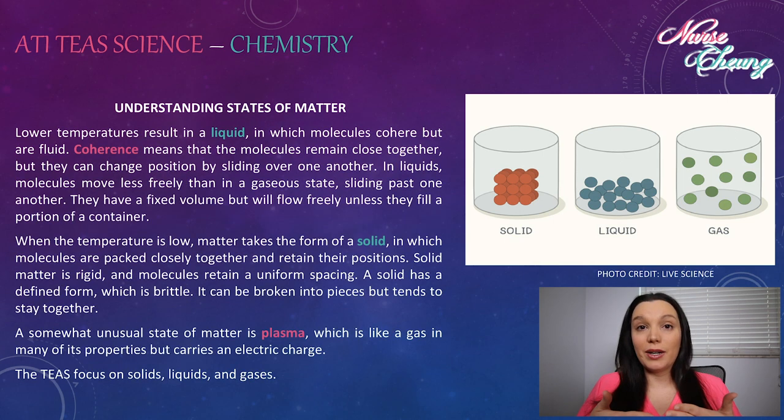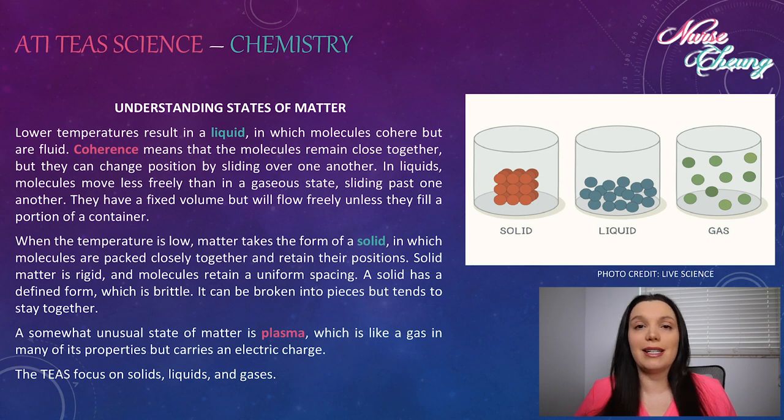Molecules are free to move at random past each other and they tend to fill any container that holds them. If a gas is not contained, its molecules will disperse. Lower temperatures result in a liquid in which molecules cohere but are fluid. Coherence means that the molecules remain close together but they can change position by sliding over one another. In liquids, molecules move less freely than in their gaseous state, sliding past one another. They have a fixed volume but will flow freely unless they fill a portion of a container.